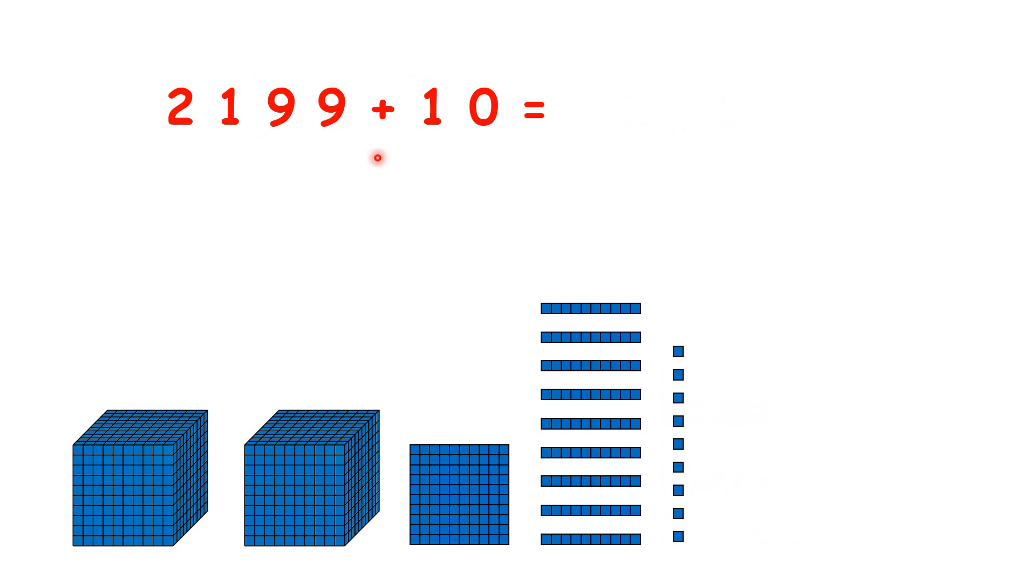Now it gets more difficult. We have 9 tens in our number, but we want to add 1 more 10. 9 plus 1 is 10, but we can't have 10, a 2-digit number, in 1 place value column. So rather than thinking of us as having 9 tens, let's think of us as having 19 tens. When we add 1 more 10, we can regroup our 10 tens to make another 100.